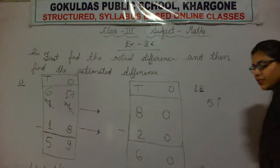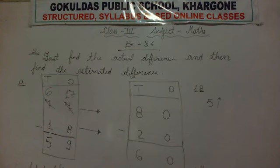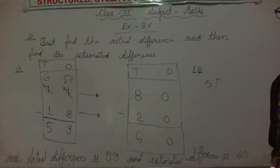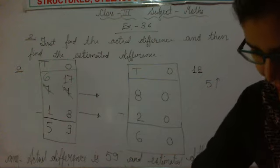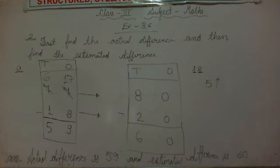So all of you note down the solution. First, we subtracted the given actual numbers and got the actual difference. Then we rounded off the given numbers, subtracted them, and our result is the estimated difference.